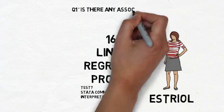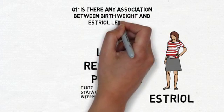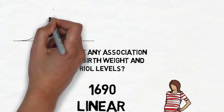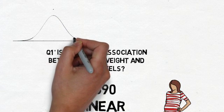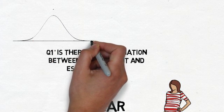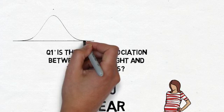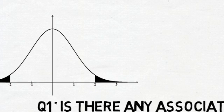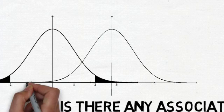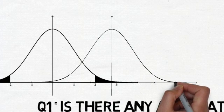Question 1 asks: is there any association between birth weight and estriol levels? Any time we're determining whether or not there's an association between two variables, we take the distributions of the variables and lay them on top of each other. In this way, we can compare whether or not they overlap and by how much, and this gives us information about the relationship between the two variables.